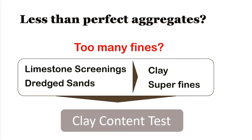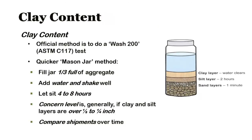Besides doing regular sieve analysis of the aggregates, there are two other tests you may want to consider. If you have an aggregate with lots of clay or superfine material — perhaps limestone screenings or dredge sand — you can get a quick idea of how much superfine material it contains by doing a clay content test. As shown here, you put some aggregate in a mason jar with water, shake it up, and let it settle for four to eight hours. The bigger particles fall to the bottom, followed by a fine silt layer and finally the clay or superfine layer on top. If this layer is over one-eighth to one-quarter inch, or varies a lot from load to load, you may want to look further into this issue. Too much superfine material in your aggregates can make the concrete mix sticky and hard to run and contribute to low strengths.